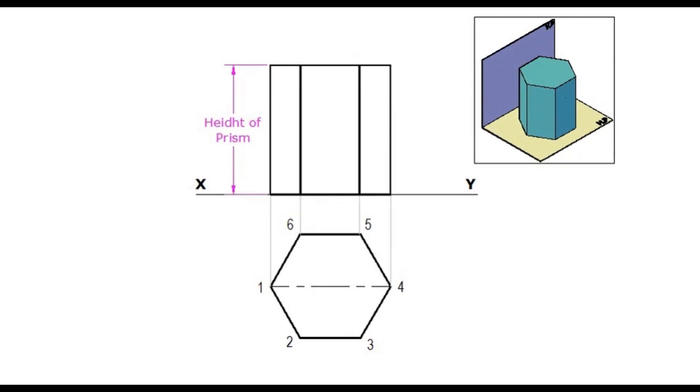Name the corners in the elevation as 1 dash, 2 dash, 3 dash, etc., up to 6 dash. Thereby the projection part is over.